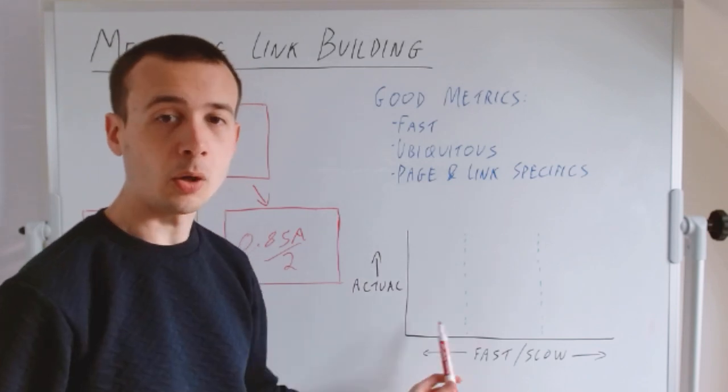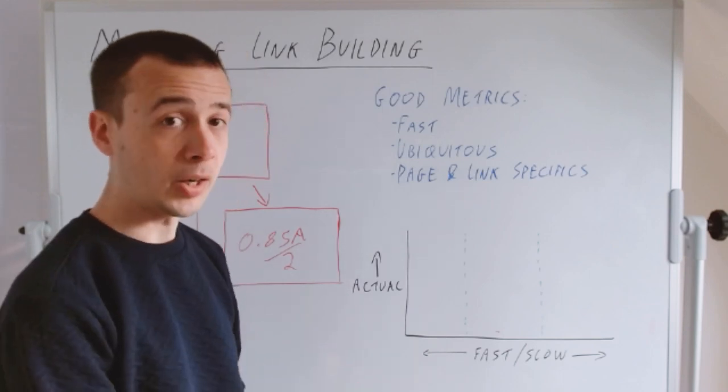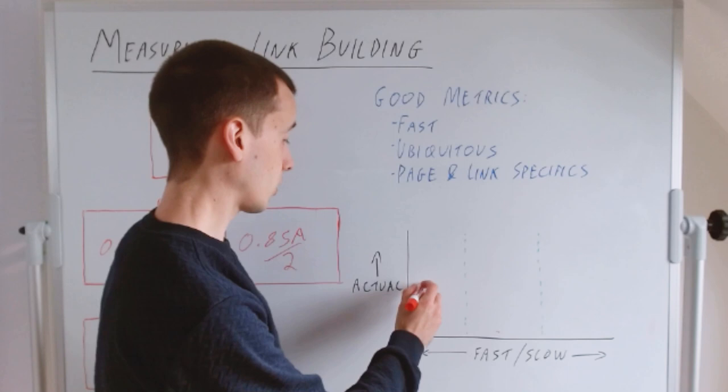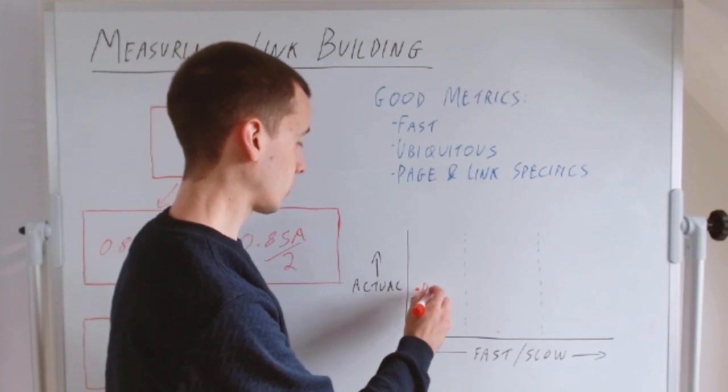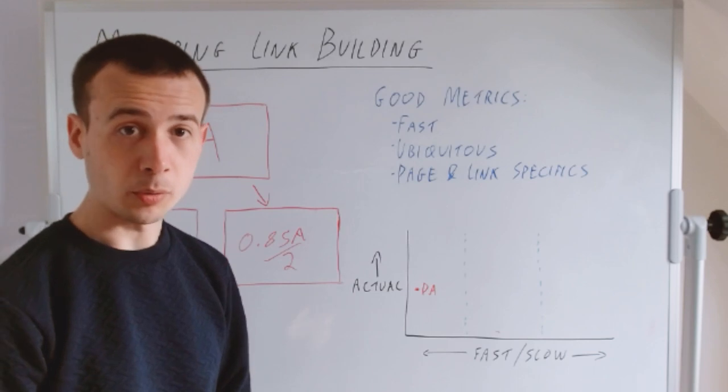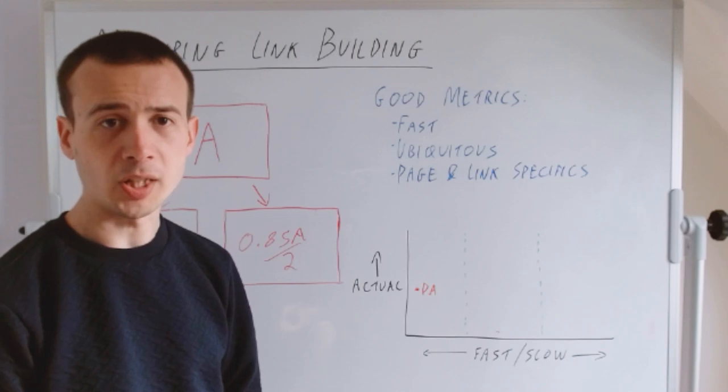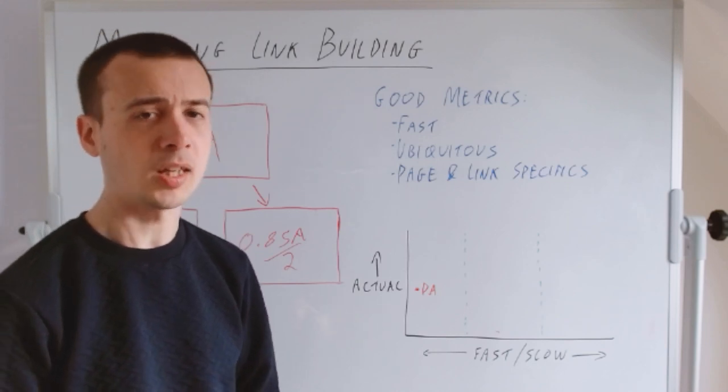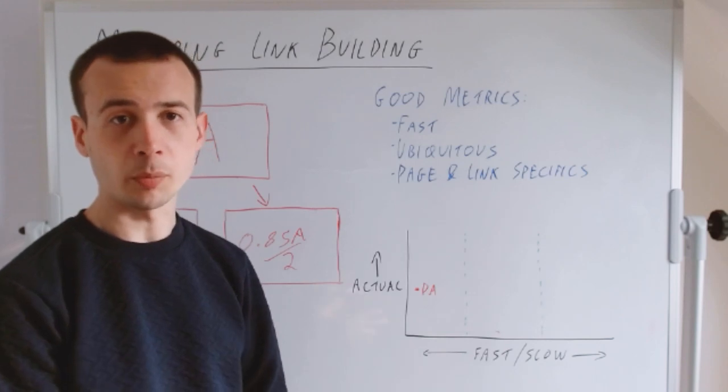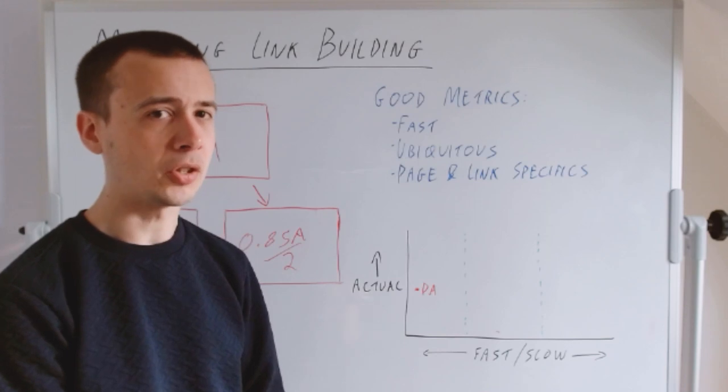I want to put some metrics on a chart like this and suggest how you might use them alongside each other. I've got 'actual' as the vertical axis—the closer it is to what we're actually trying to measure, which is Google's view of the value of the link, the further up it's going to be. I've also got this fast-slow convenience metric. A metric like domain authority is probably somewhere here.